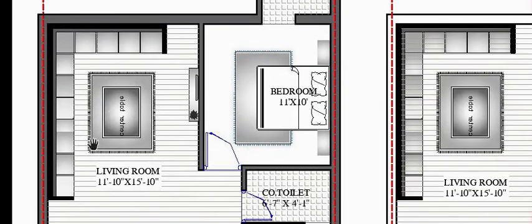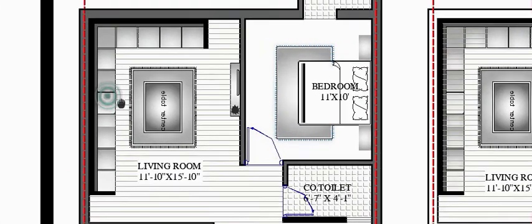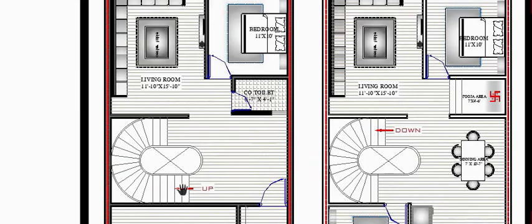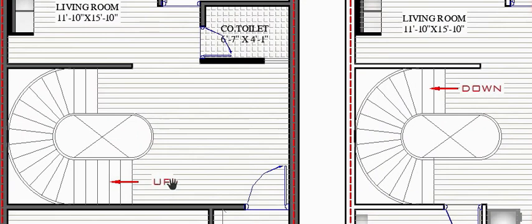The living room is 11 feet 10 inches by 15 feet 10 inches — horizontally 11 feet 10 inches and vertically 15 feet. There is also the staircase, which goes toward the upper direction to the first floor plan.